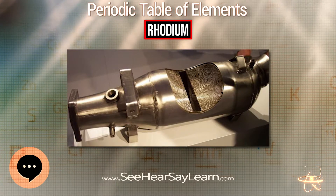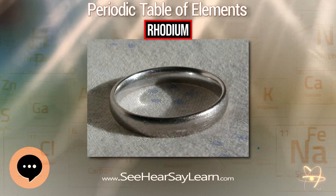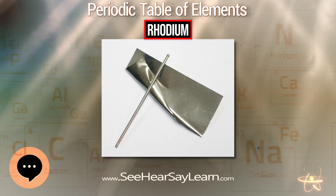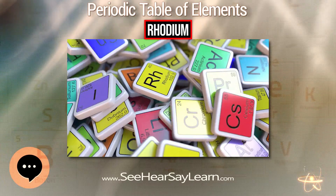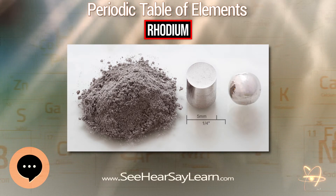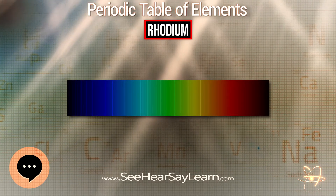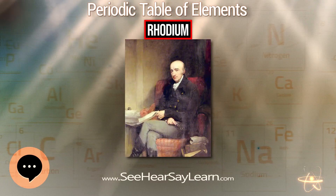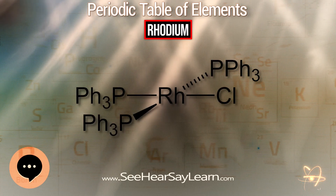People can be exposed to rhodium in the workplace by inhalation. The Occupational Safety and Health Administration has specified the legal limit for rhodium exposure in the workplace at 0.1 mg/m³ over an eight-hour workday, and the National Institute for Occupational Safety and Health has set the recommended exposure limit at the same level. At levels of 100 mg/m³, rhodium is immediately dangerous to life or health. For soluble compounds, the PEL and REL are both 0.001 mg/m³.